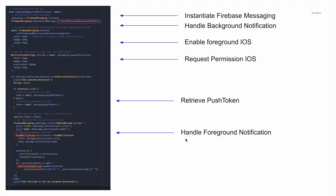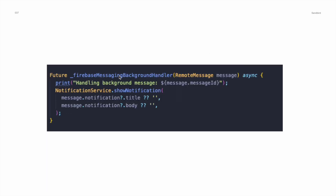Next, we have a method to handle foreground notifications. We call `FirebaseMessaging.onMessage.listen`, where we receive a remote message. In this remote message, we parse the data and put it into a PushNotification class. We then call our NotificationService class to show the notification to the user, which I'll explain more on the next slide. But first, let's look at how the Firebase Messaging background handler method looks. In it, we get the remote message and show it by calling `NotificationService.showNotification()`.